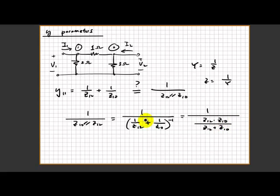If you flip this to the other side, the z's cancel out, and that eventually will be just 1 over z12 plus 1 over z10.